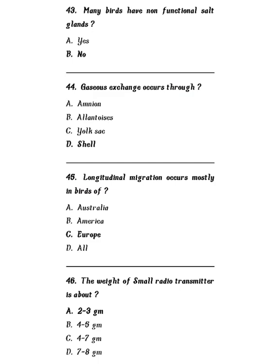Question 45: Longitudinal migration occurs mostly in birds of Australia, America, Europe, or all of the above? The correct answer is Europe. Longitudinal migration occurs mostly in birds of Europe. Question 46: The weight of a small radio transmitter is about 2 to 3 grams, 4 to 5 grams, 4 to 7 grams, or 7 to 8 grams? This is a very important question. The weight of a small radio transmitter is about 2 to 3 grams.